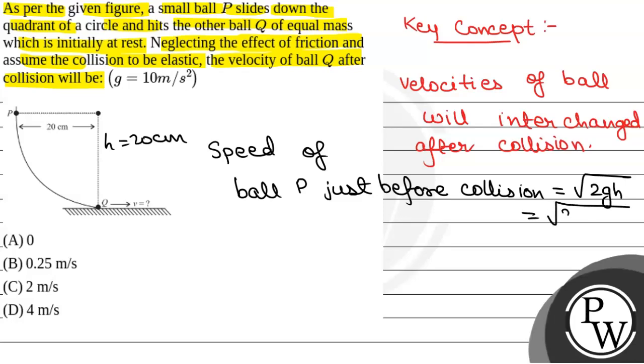that will be equal to root over 2 into g is 10 meter per second, h is 20 centimeter that is 0.2 meter. So, that will be equal to root over 4 that is 2 meter per second. And,